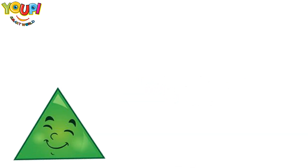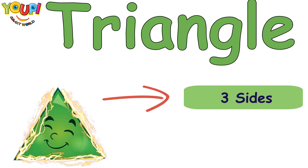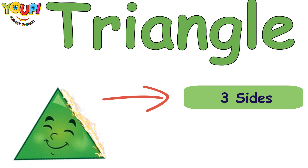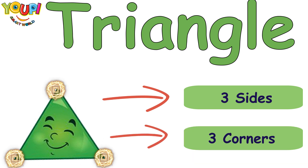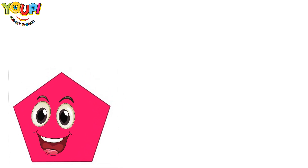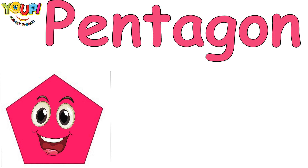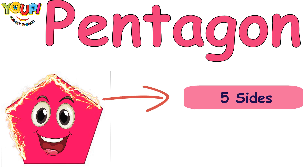What shape is this? What's the name of this shape? That's right, it's a triangle! It has three sides and three corners. What shape is this? What's the name of this shape? That's right, it's a pentagon!